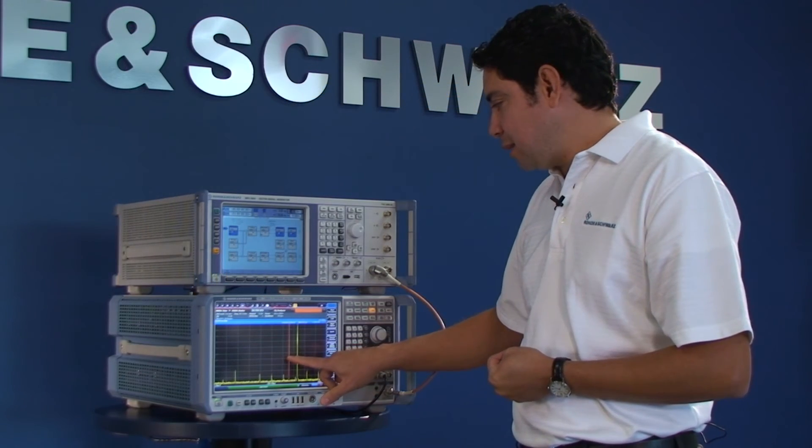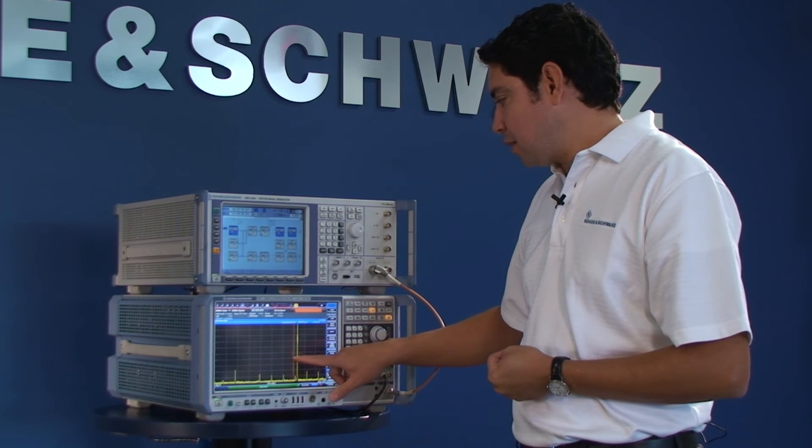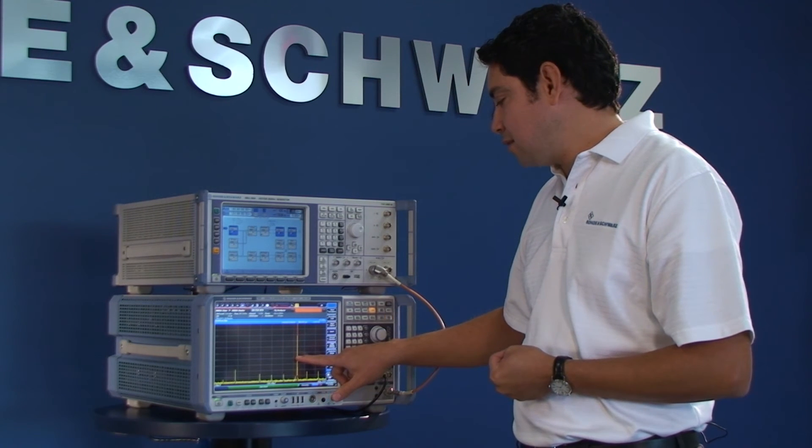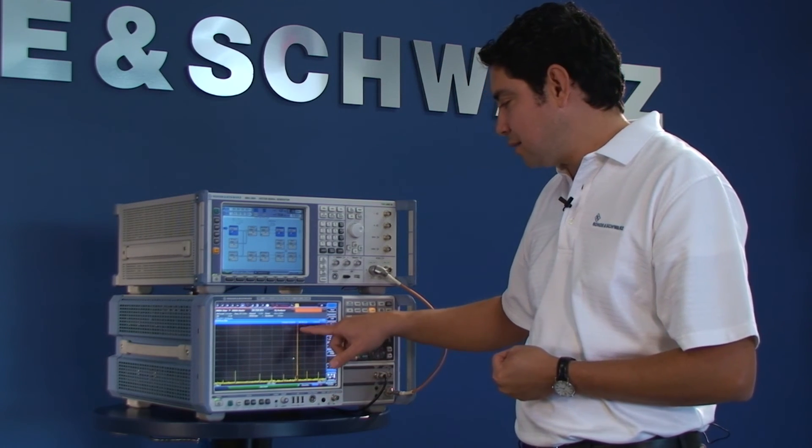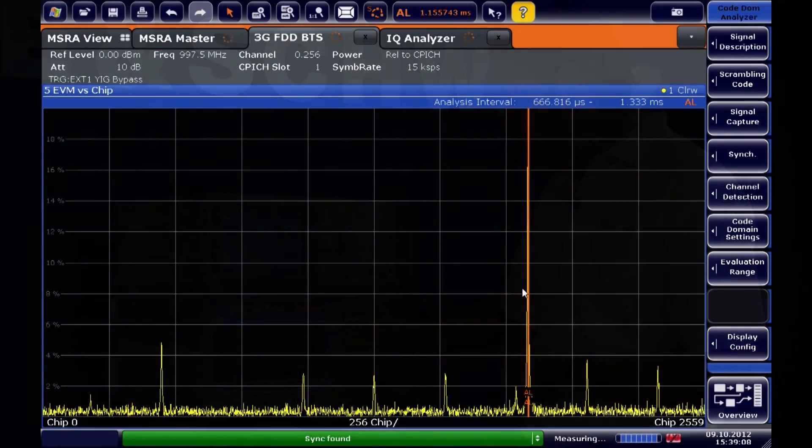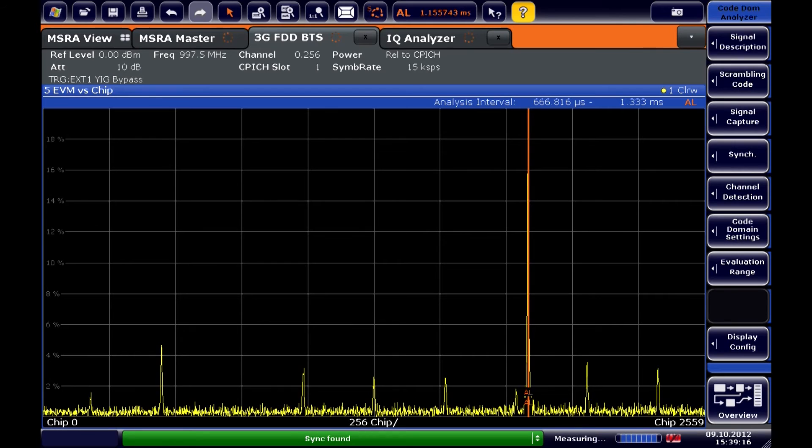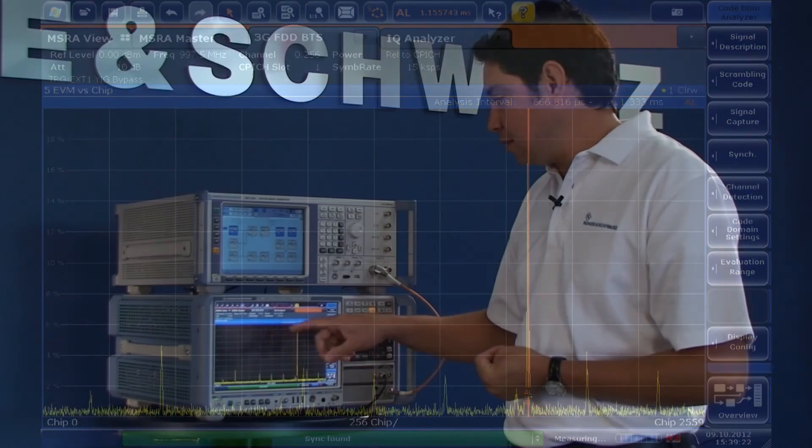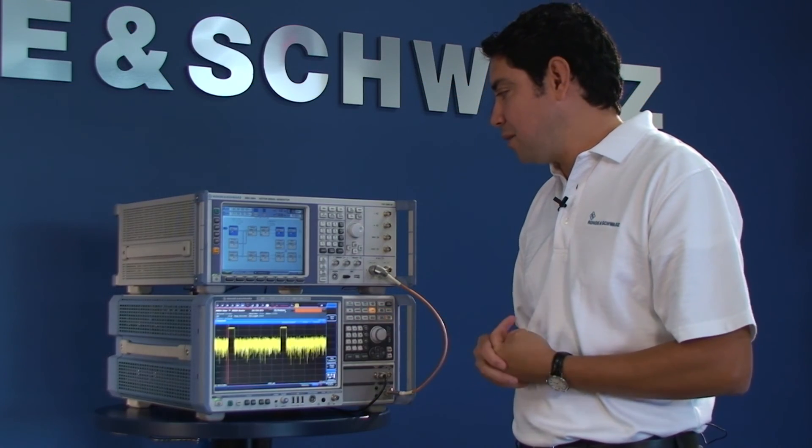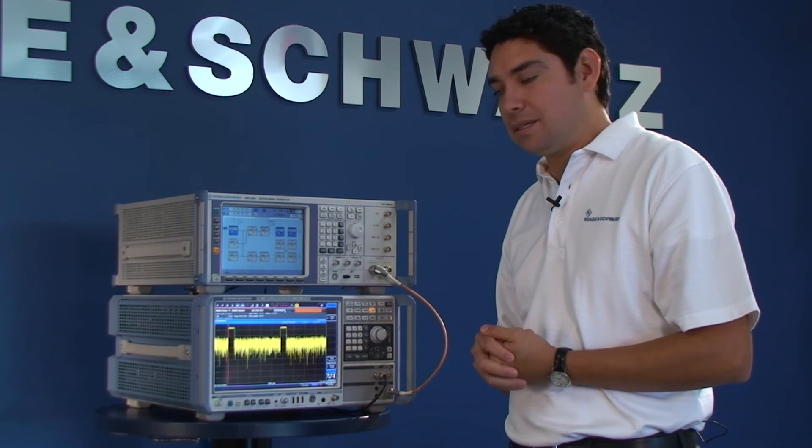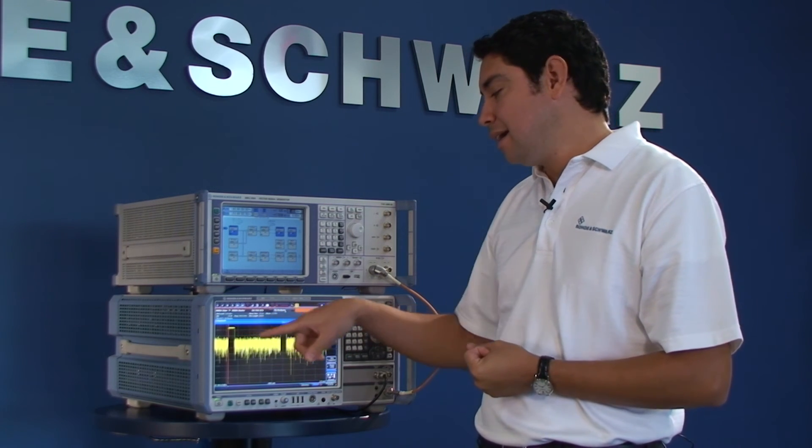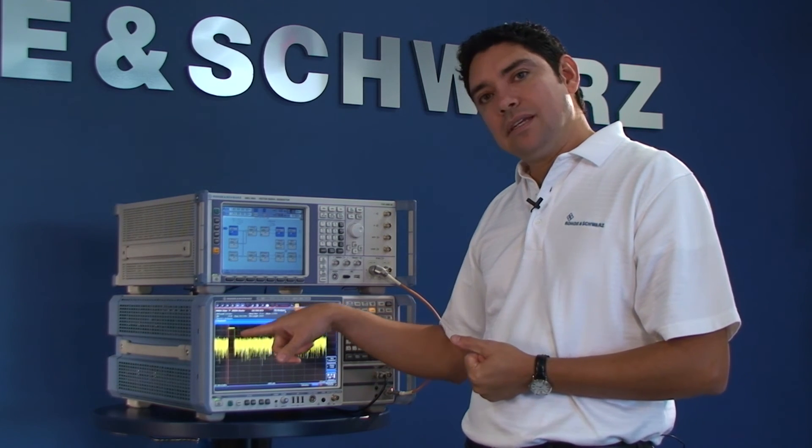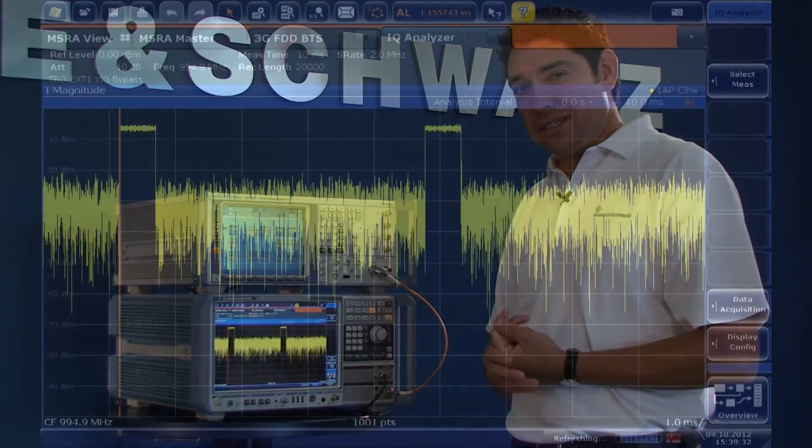In here I can take my global marker and place it right on top of where I see the highest distortion. I can see right in this area of the screen where I have the highest EVM in my EVM versus chip display. Now after I tune it right into the area of the distortion, I can go back into my IQ analyzer where I'm looking at my GSM burst, and I can see how that line lines up perfectly to the rising edge of my GSM burst.